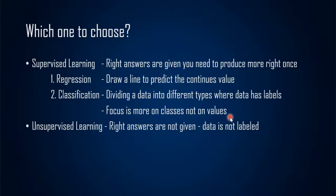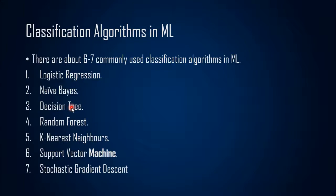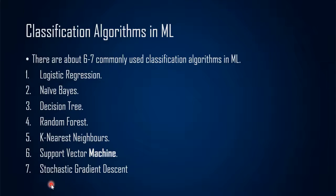Before we proceed to classification examples, let me show you all the types of algorithms under classification. Which algorithms can we practically implement to achieve classification? In the classification algorithms, we have about six to seven most popular, well-known algorithms in machine learning. One of them is logistic regression, which we will see in demo in the next video. Others include Naive Bayes, decision tree, random forest, K-nearest neighbors, support vector machine, and stochastic gradient descent. There are more, but these are the most famous ones. For now, logistic regression is our focus.